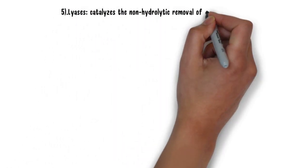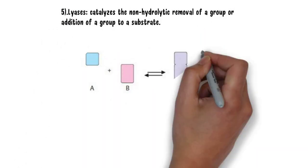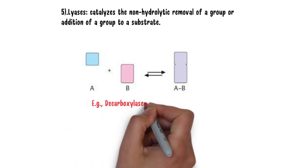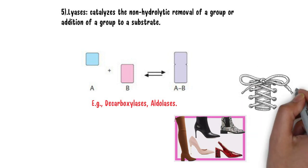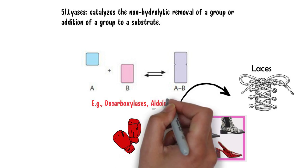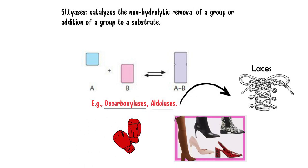The next category of enzymes is lyases. Lyases catalyze the non-hydrolytic removal of a group or addition of a group to a substrate. The examples include decarboxylases and aldolases. There is a simple mnemonic to remember this — just think about laces. Laces are present in shoes as well as boxing gloves. Aldo is a famous shoe brand, so just remember aldolases; and boxing gloves will help you remember decarboxylases.